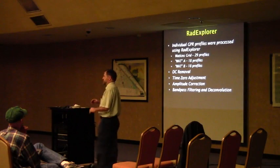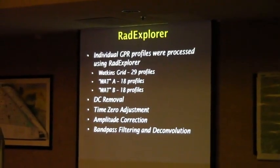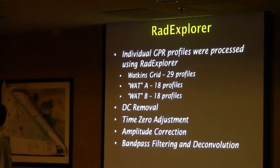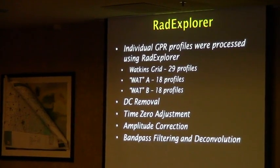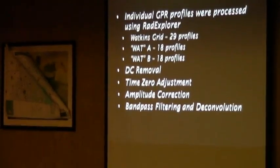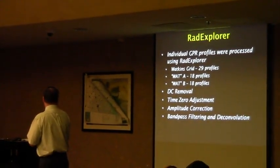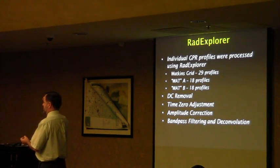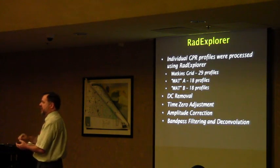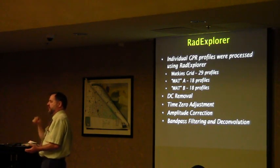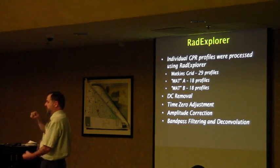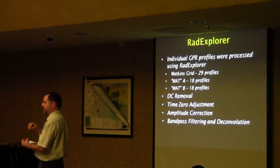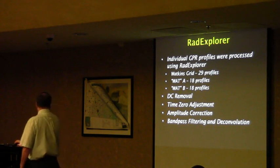We actually didn't do as much filtering of the profiles. There are a couple of things that you do with the profiles to make the signal stand out more. You correct, for example, for the fact that the radar wave is losing energy as it goes down into the ground, to boost it a little bit — this is called gain. That way you can get a truer depth and a truer image of what's going on under the ground as it goes deeper, otherwise it's going to fade off and you're only going to see features near the surface. So that's called amplitude correction.